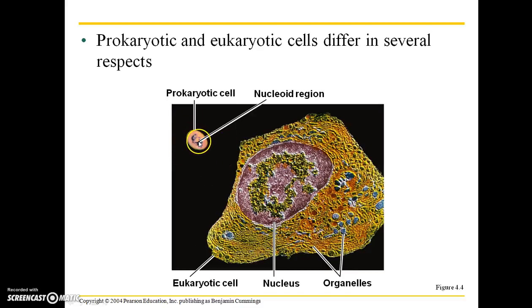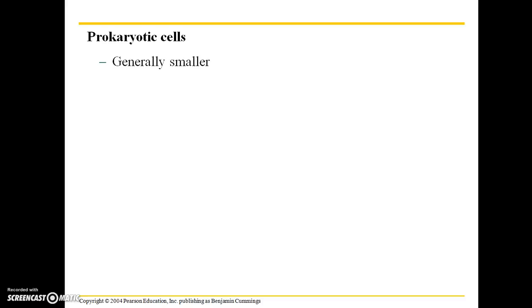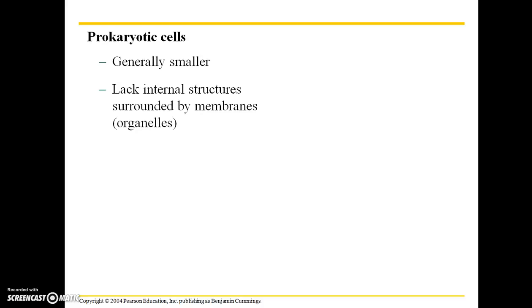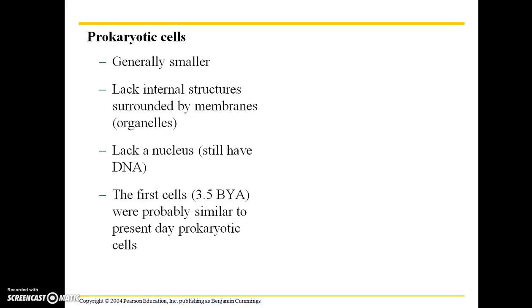A prokaryotic cell does not have a nucleus surrounded by a membrane — they just have a nucleoid region — whereas a eukaryotic cell has a distinct membrane around the nucleus and also has organelles. So prokaryotic cells are generally smaller, they lack internal structures surrounded by membranes (otherwise known as organelles), and they lack a nucleus, but it's important to remember that they still have DNA. These were the first types of cells, and prokaryotic cells arose on earth about 3.5 billion years ago.